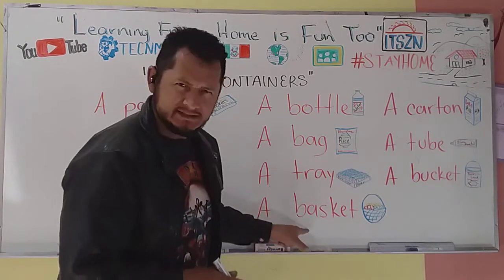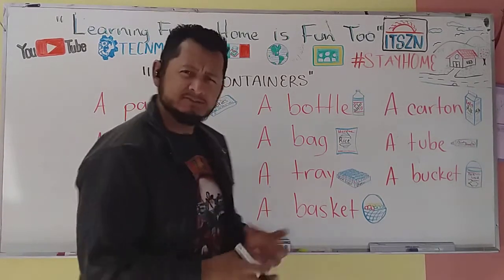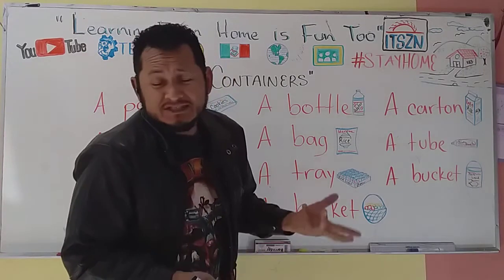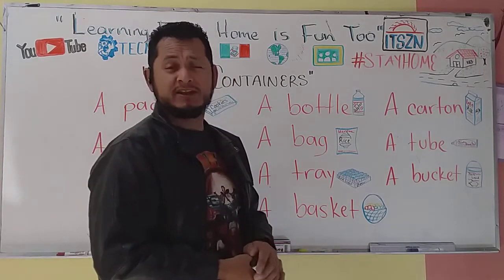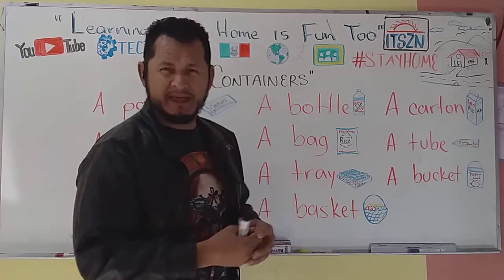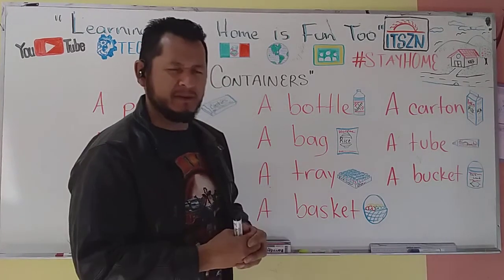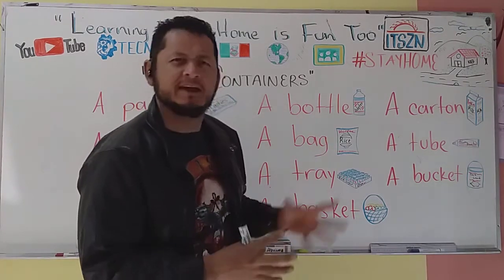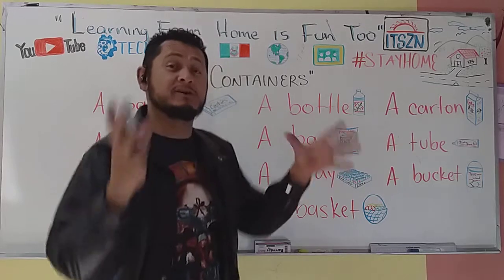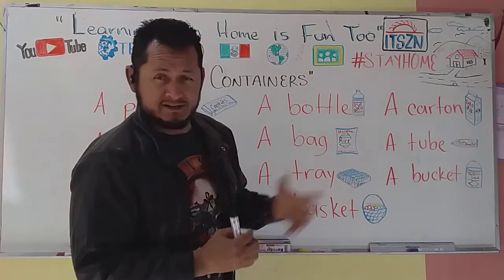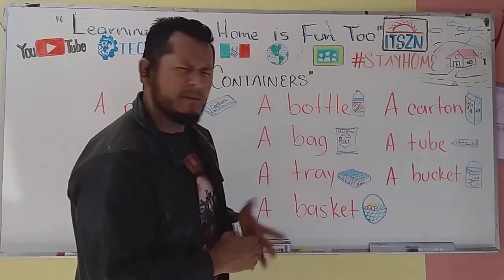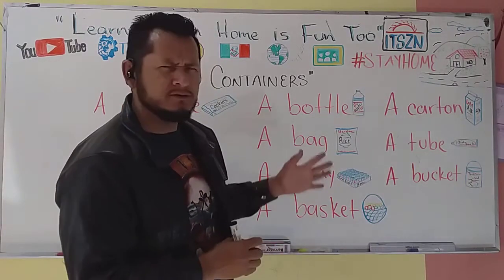A basket es una canasta, un canasto. Puede ser de muchísimos productos — de plástico, de paja, de palma, depende donde la consiga el que quiera comprar. Hay unas que ya vienen adornadas, bien bonito, con diferentes productos adentro, hasta con dulces. A basket.